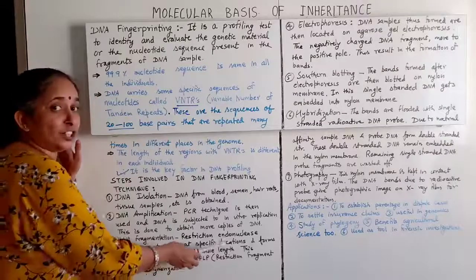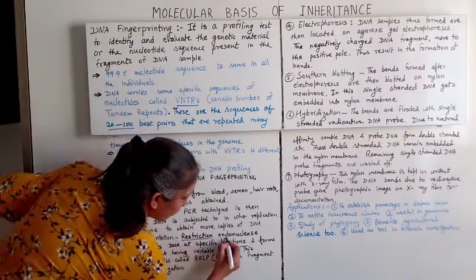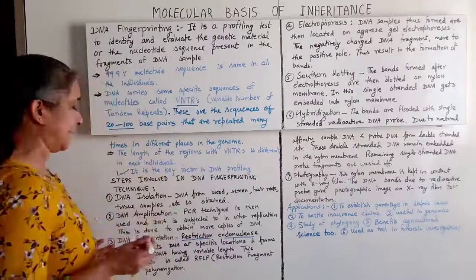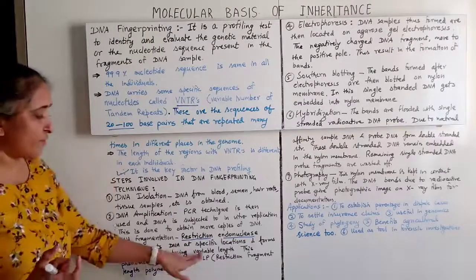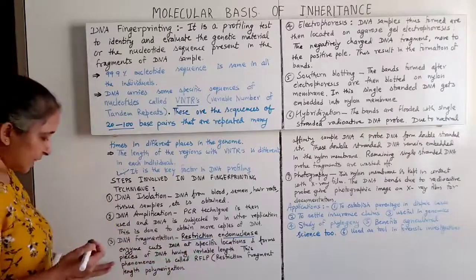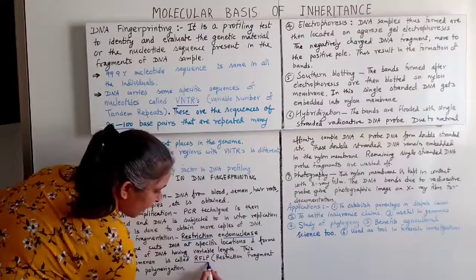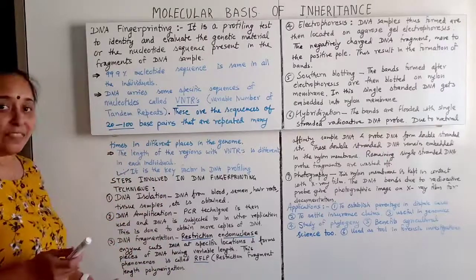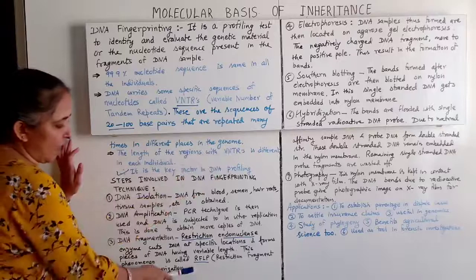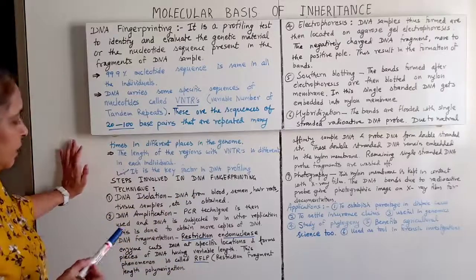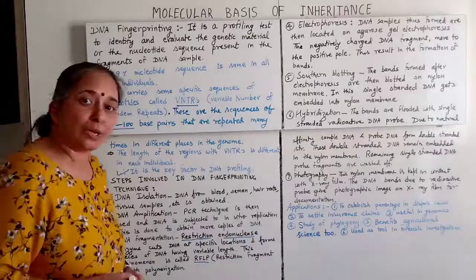Third, DNA fragmentation: restriction endonuclease enzyme cuts DNA at specific locations, forming pieces of DNA with variable lengths. This phenomenon of cutting DNA at a specific location is called RFLP — Restriction Fragment Length Polymorphism. This is done with the restriction endonuclease enzyme.